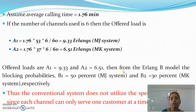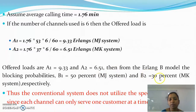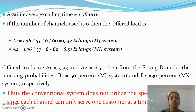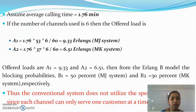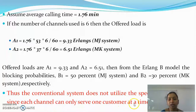From the Erlang B model chart, we can find the blocking probabilities. The blocking probability B1 = 50% for the MJ system and B2 = 30% for the MK system. This means 50% of customers are waiting for a channel in the MJ system, demonstrating the high demand. The conventional system does not utilize the spectrum efficiently since each channel can only serve one customer at a time across the whole area.